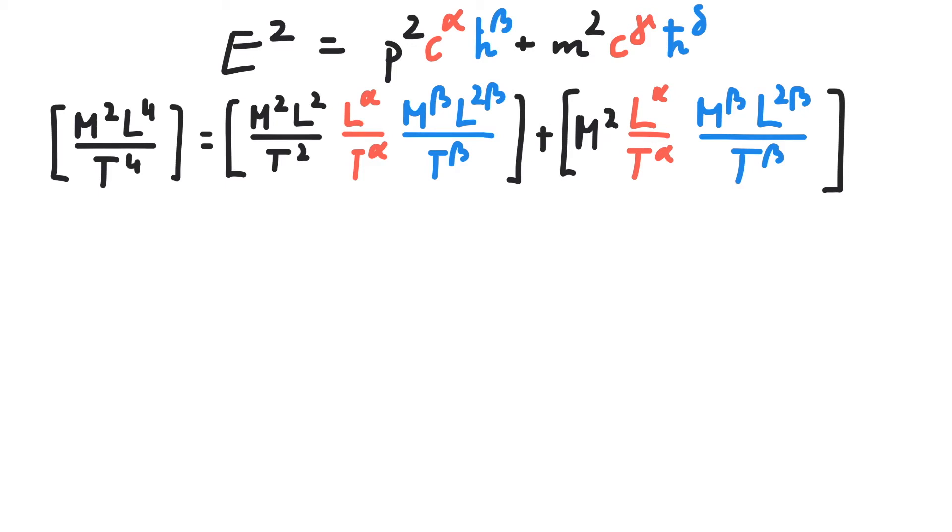Now we demand that the units on the left and right-hand side of the equation match up. We compare exponents of mass, length and time, which gives us equations in our four unknowns, three for each term.